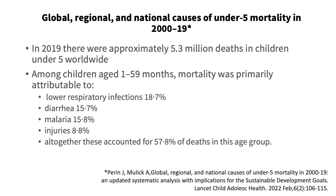When you look at why children are dying worldwide, it's largely due to infectious causes. A study published in the Lancet Child and Adolescent Health in 2022 examined 5.3 million deaths in children under five worldwide. Among children ages 1 to 59 months, mortality was primarily attributed to lower respiratory tract infections, diarrhea, malaria, and injuries — these four categories accounted for almost 60% of deaths in this age group.